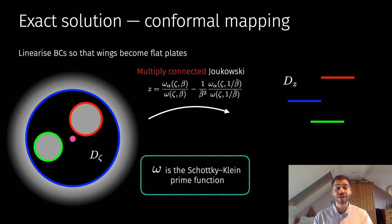The β in this map corresponds to the pre-image of infinity, and ω is a special function known as the Schottky-Klein prime function. Every circular domain has an associated prime function, so if we change this circular domain, we change the image domain here and we also change the prime function, and that allows us to express this multiply connected Joukowski map in a consistent manner regardless of connectivity.